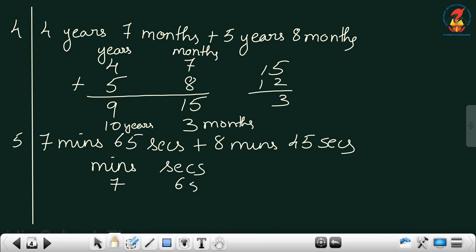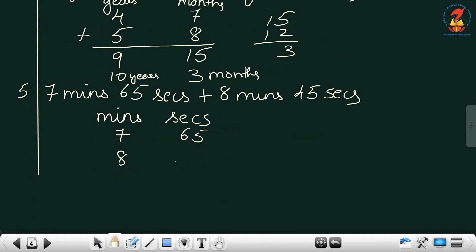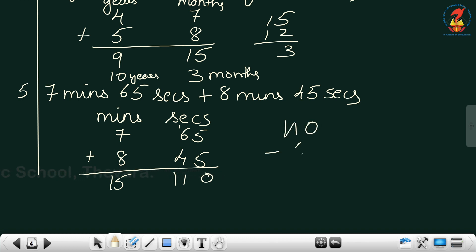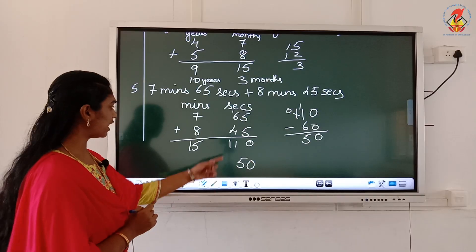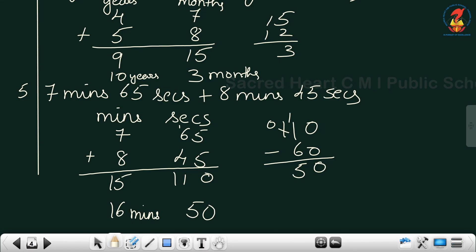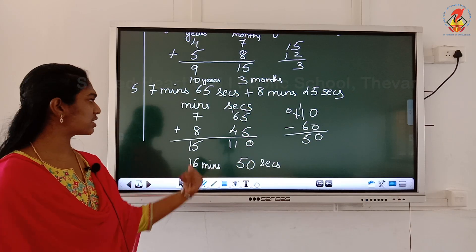Next: minutes and seconds. 7 minutes 65 seconds plus 8 minutes 45 seconds. When I add the seconds: 65 plus 45, I get 5 carry 1, giving 110 seconds. And 7 plus 8 is 15 minutes. The relation: 1 minute is 60 seconds. So I take away 60 from 110 and get 50 seconds. That 60 seconds is 1 minute, so I add it to 15 and get 16 minutes. Answer: 16 minutes 50 seconds.